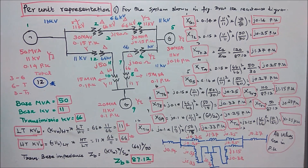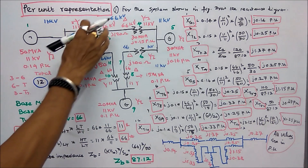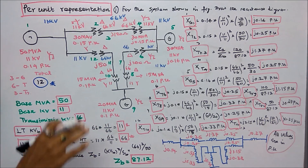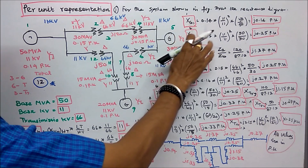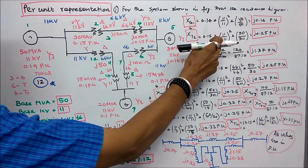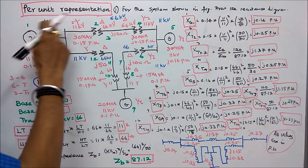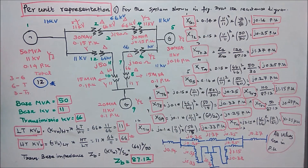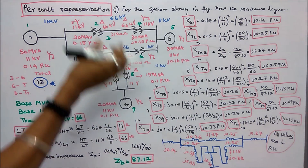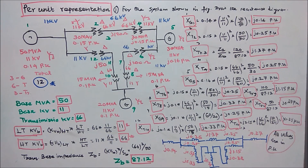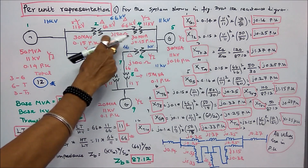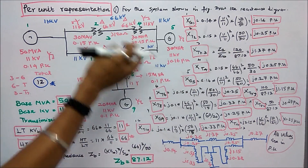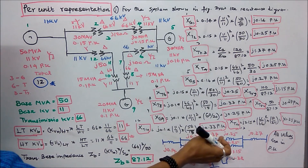For transformers 2 and 12, their ratings are the same so the reactance is the same: 0.15 × (11/11)² × (50/30) = J0.25 per unit. For transmission line 1: actual impedance is J120 ohms; per unit = 120 / 87.12 = J1.37 per unit.